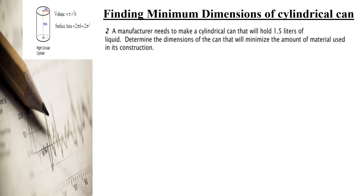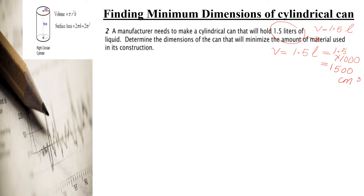The key piece of information here is 1.5 liters, which means the volume of the cylindrical can is 1.5 liters. Whenever a volume is given in liters, you have to convert it to cubic centimeters by multiplying by 1000, giving you 1500 cubic centimeters. This will allow us to express the dimensions in centimeters.